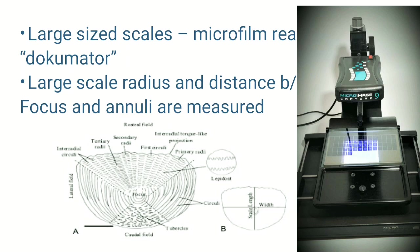Growth variation in fishes shows that in the early stages of life, fish grow more rapidly. After gonad development and reaching maturation, growth slows down with age. This means the growth rings in older fish are more closely spaced, making scale reading more difficult.